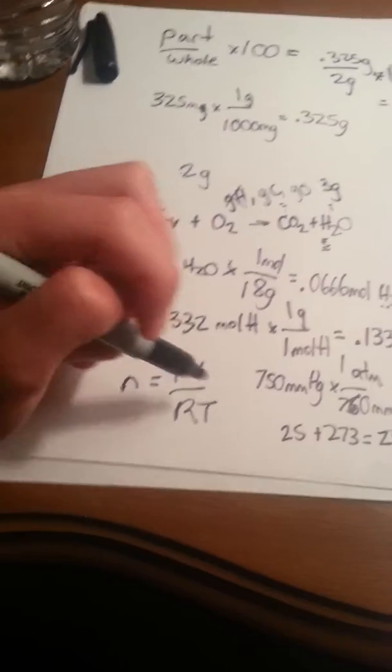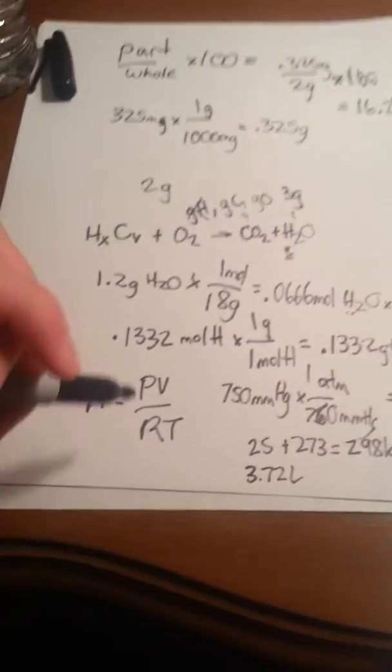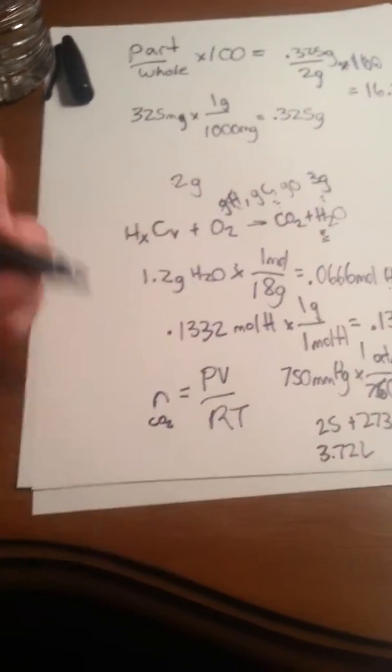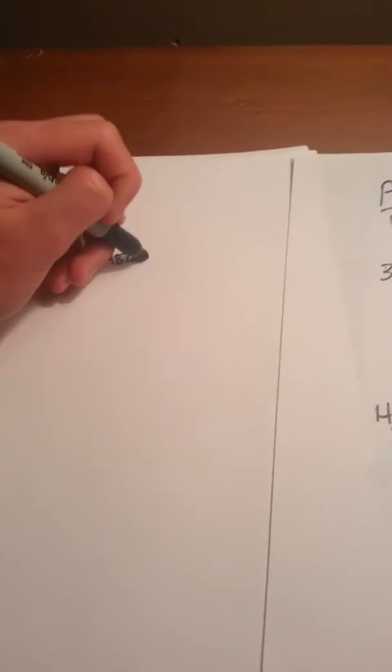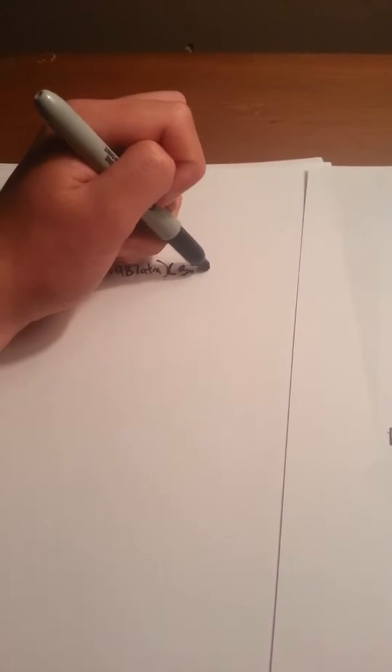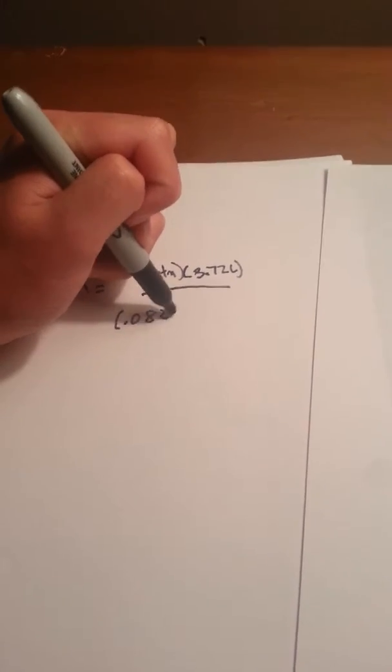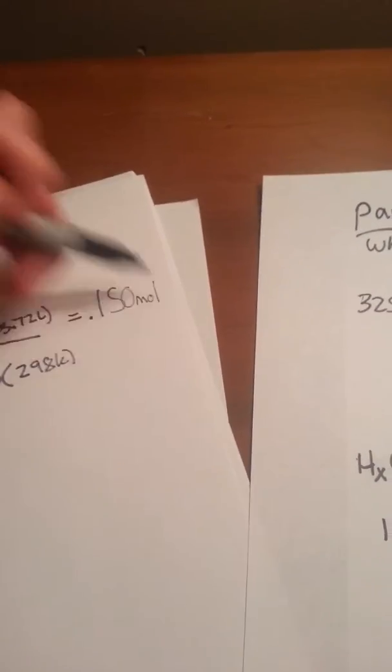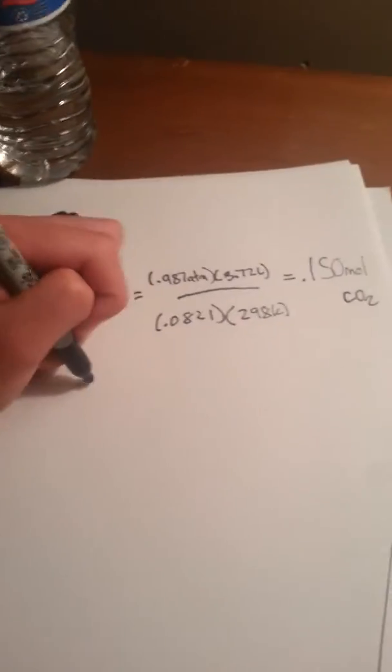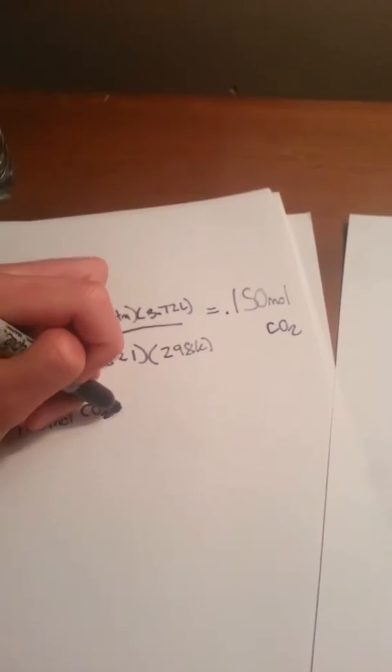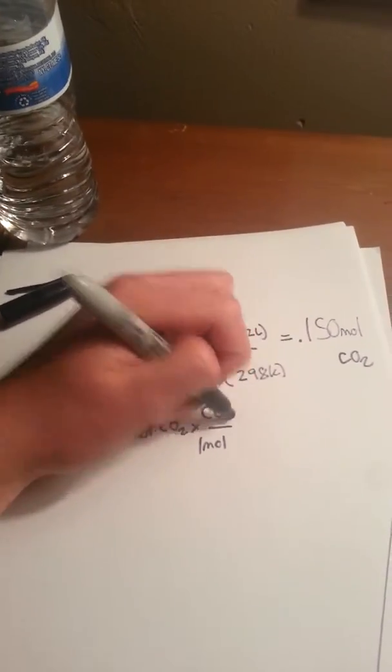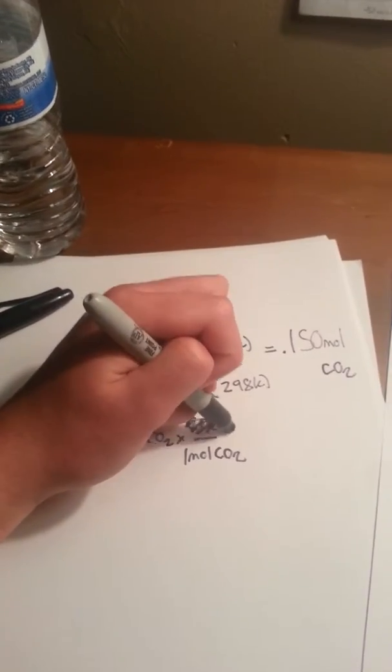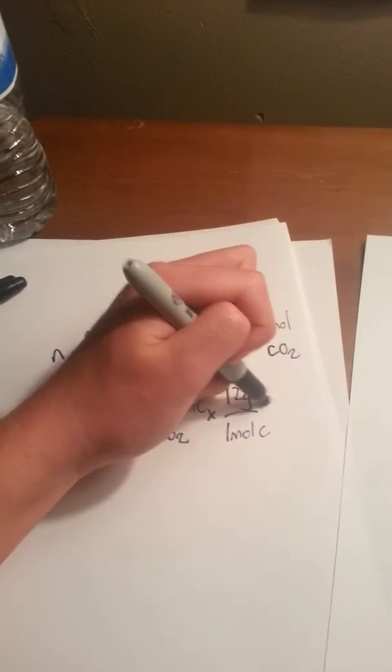We're going to plug this all in. The volume is 3.72 liters of carbon dioxide. So n equals 0.987 ATM times 3.72 liters, all over the constant R times 298 Kelvin. This gives us 0.150 moles of CO2. We need grams of C, so we take 0.150 moles CO2, times 1 mole C per 1 mole CO2, times 12 grams per mole C. That's 1.8 grams of C.